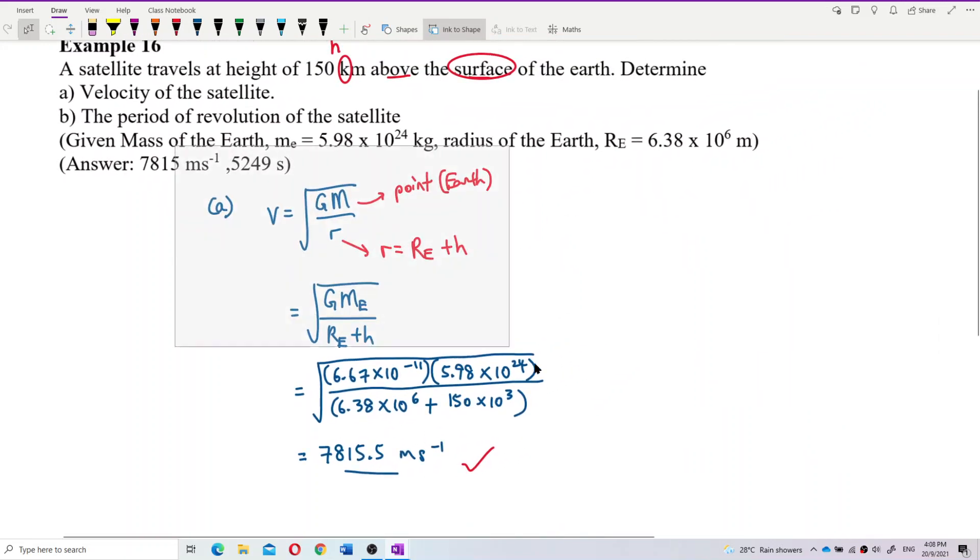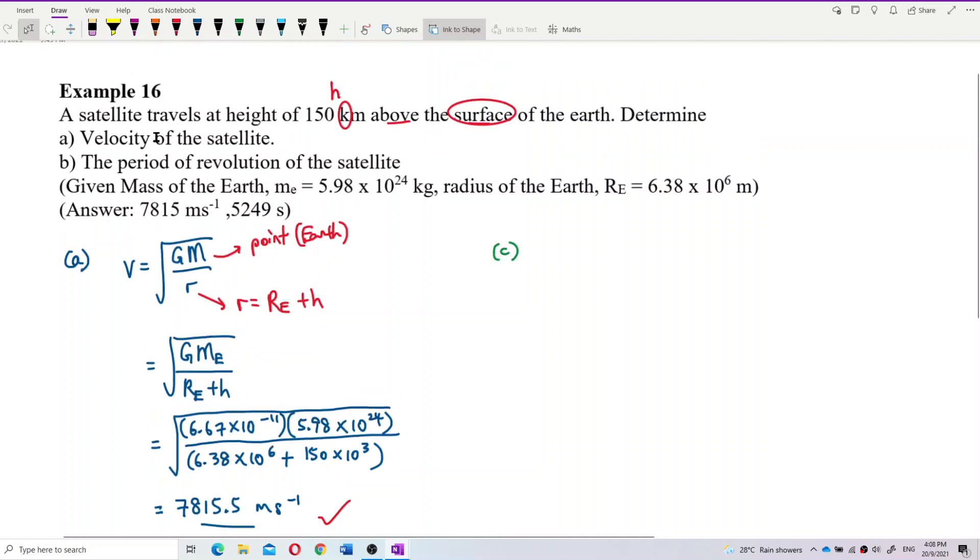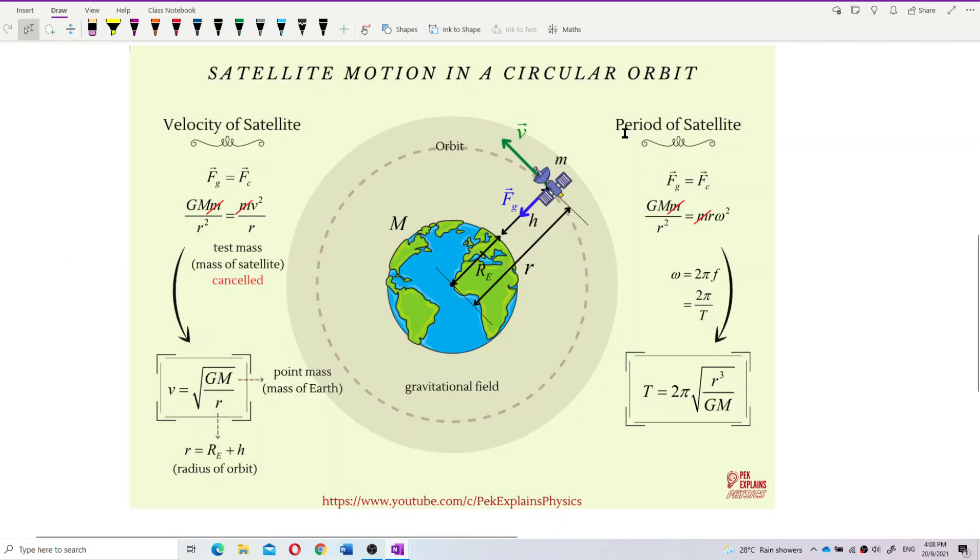Now, next, we want to find the period. Let's find out the period. What's the period of revolution of the satellite? Period of satellite also we use Fg equal to Fc, gravitational force equal to centripetal force.